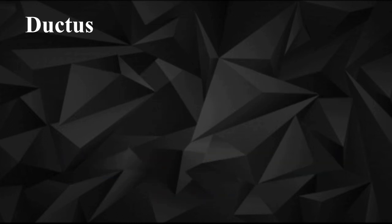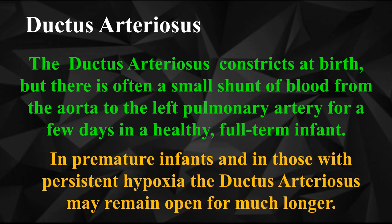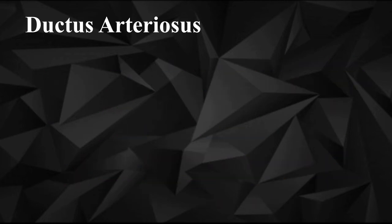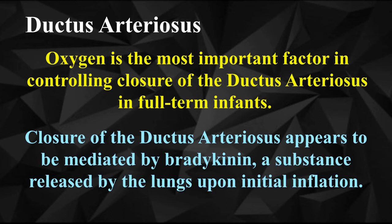The output from the right ventricle now flows entirely into the pulmonary circulation. 5. Ductus arteriosus: The ductus arteriosus constricts at birth, but there is often a small shunt of blood from the aorta to the left pulmonary artery for a few days in a healthy, full-term infant. In premature infants and in those with persistent hypoxia, the ductus arteriosus may remain open much longer. Oxygen is the most important factor in controlling closure of the ductus arteriosus in full-term infants. Closure appears to be mediated by bradykinin, a substance released by the lungs upon initial inflation.